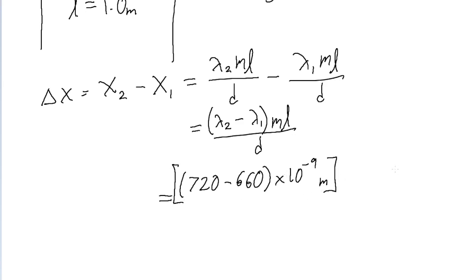This is multiplied by m. Remember that m is the order of the fringe, and we're told in the problem we're looking at second order fringes, so m just becomes 2. Then L is 1 meter, that's the distance between the slits and the screen. And then we divide it by D, which is the distance between the two slits, so that's 6.2 times 10 to the power of negative 4 meters.